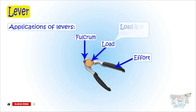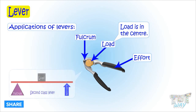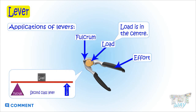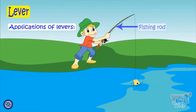Here the load is in the center, and when the load is in the center, it is a second-class lever. So the nutcracker is a second-class lever. Now here we have one more example — a fishing rod. It's a lever; let's see how and which type.